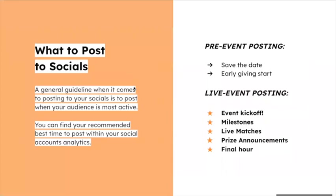For what to post to socials and when to post, a general guideline is to post when your audience is most active — look at your analytics. For pre-event suggested posting: a save the date, very similar to your email strategy. An early giving start post: 'Hey, early giving is open, click the link in bio to make your gift.' Then your live event posting: your kickoff, milestones like 'we've reached halfway to our donor goal, we need 25 more donors, can you help make this happen,' any live matches like 'for the next hour any donations will be doubled,' and prize announcements.